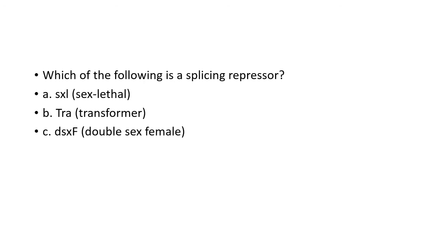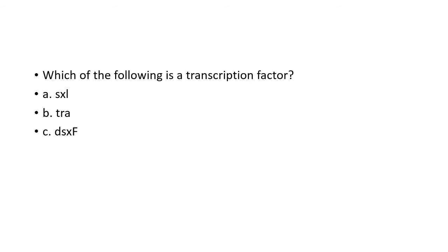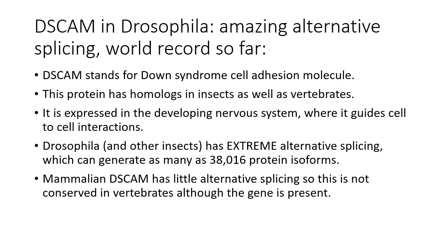Now we have a few clicker questions. Which of the following is a splicing repressor: sex lethal, transformer, or doublesex female? The answer is sex lethal. Which of the following is a transcription factor: sex lethal, tra, or doublesex female? It's doublesex female. Which of the following is a splicing activator: sex lethal, tra, or doublesex female? Tra. Now we're going to talk about the most amazingly complicated example of alternative splicing in the world, and that is the DSCAM gene of Drosophila and other insects. It's the world's record for the most possible alternative proteins from the same pre-mRNA. DSCAM stands for Down syndrome cell adhesion molecule.